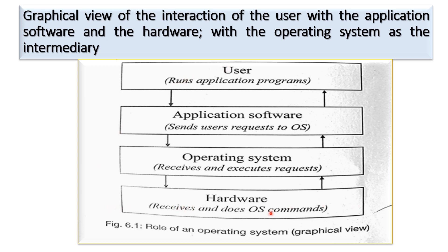You as the user cannot directly tell the hardware what to do. You go to the application, the application does not command the hardware directly either — it goes through the operating system. The operating system tells what is supposed to be done by the hardware. So the operating system is the go-between between you the user and the hardware.